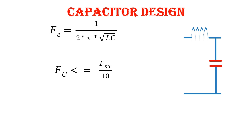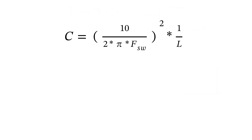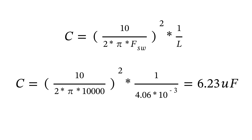To get good switching frequency attenuation, the cutoff frequency is kept at f_sw divided by 10 or lower. Equating the two expressions gives f_sw/10 = 1/(2π√(LC)). The final equation for capacitance is C = (10 / (2π·f_sw))² × (1/L_i). Substituting all values from our specifications gives a capacitance of 6.23 microfarads.